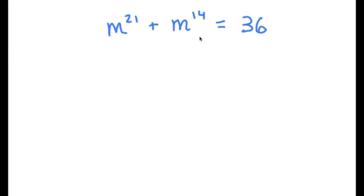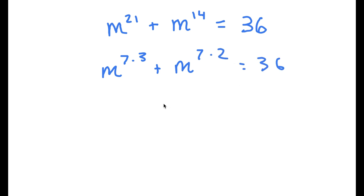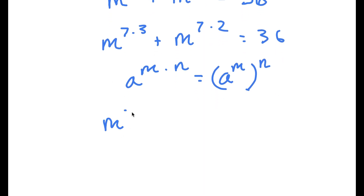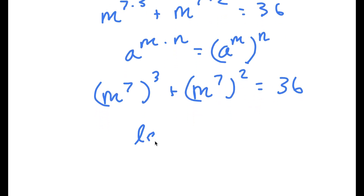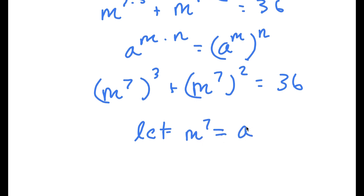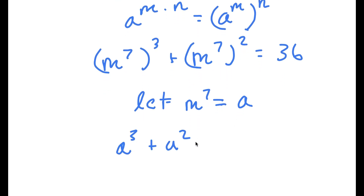In this problem, I have m to the power of 21 plus m to the power of 14 is equal to 36. I'm going to rewrite m to the power of 21 as m to the power of 7 times 3, and m to the power of 14 as m to the power of 7 times 2. Since a to the power of m times n equals a to the power of m to the power of n, I get (m^7)^3 plus (m^7)^2 equals 36. Now I'm going to let m to the power of 7 equal variable a, so I have a cubed plus a squared is equal to 36.